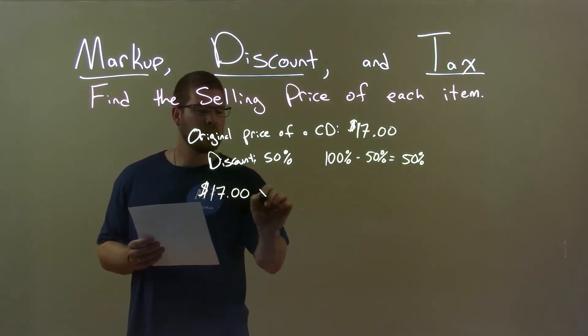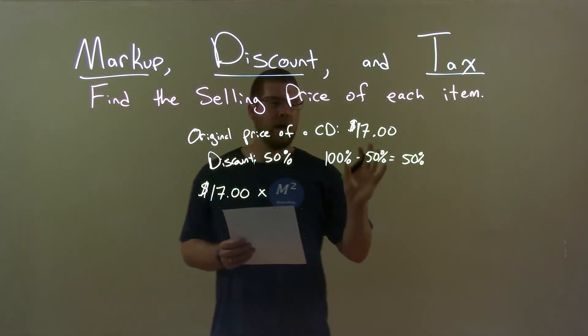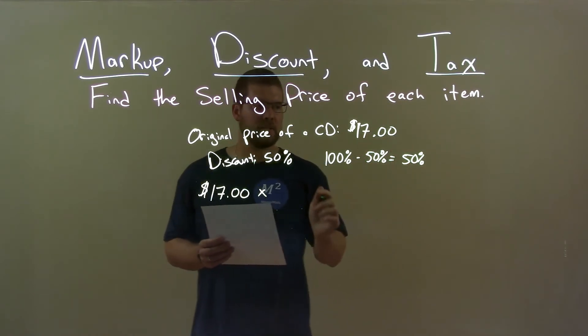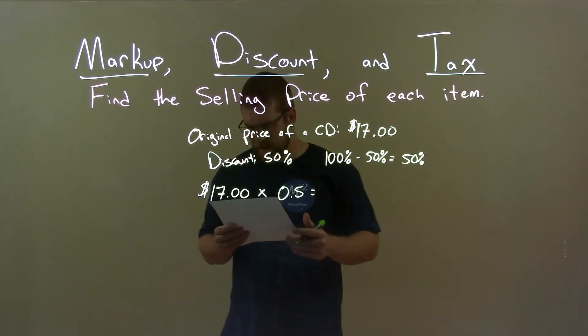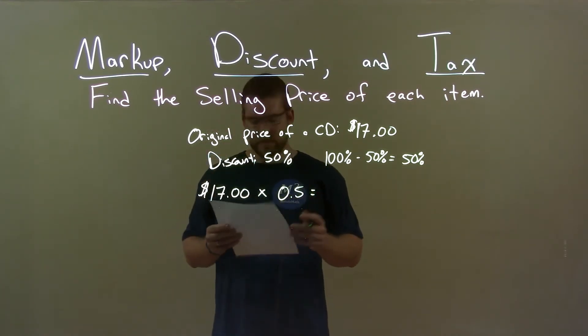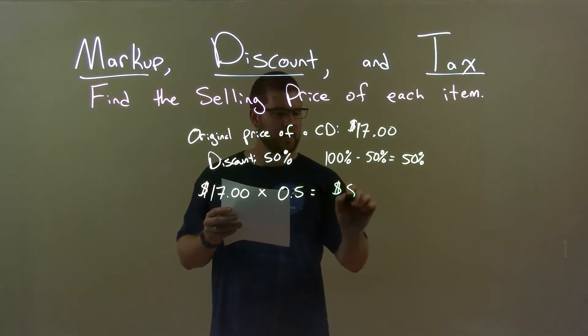and we multiply that by what percent of that we're actually going to pay, which is 50% as a decimal, 0.5, and that gives us a final answer of $8.50.